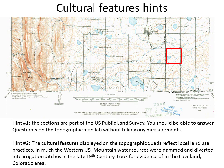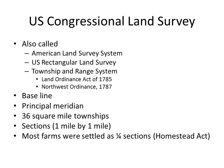On this map, we see some examples you can use as cultural features. Some of the lab questions ask about two things you may not be familiar with. One is to estimate the extent of a section of land — this is something you can answer without additional measurements, though you can measure if you want to. The second hint is that cultural features on topographic quads sometimes reflect local land use practices. In much of the western United States, mountain water sources were dammed and diverted into irrigation ditches in the late 19th century, and there's evidence of this in the Loveland, Colorado area, especially on the 15-minute series map.